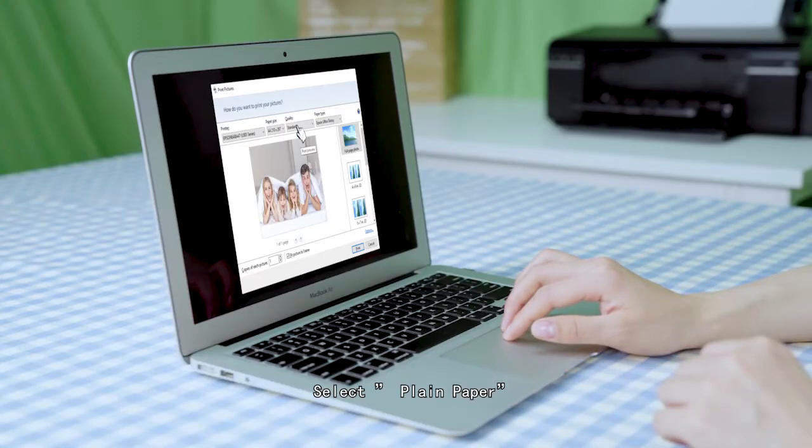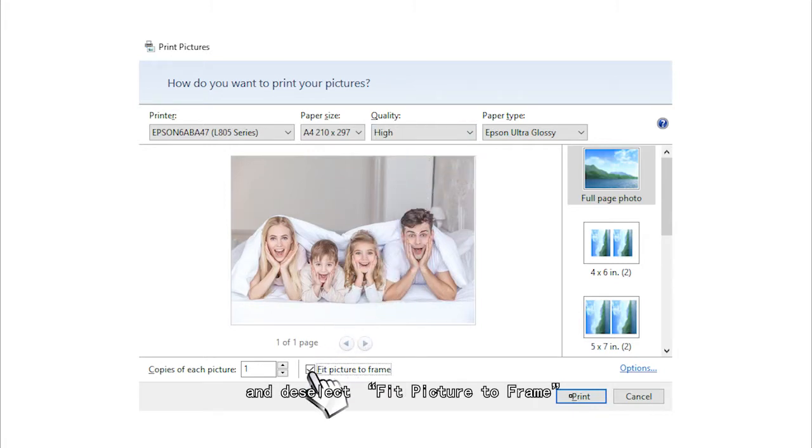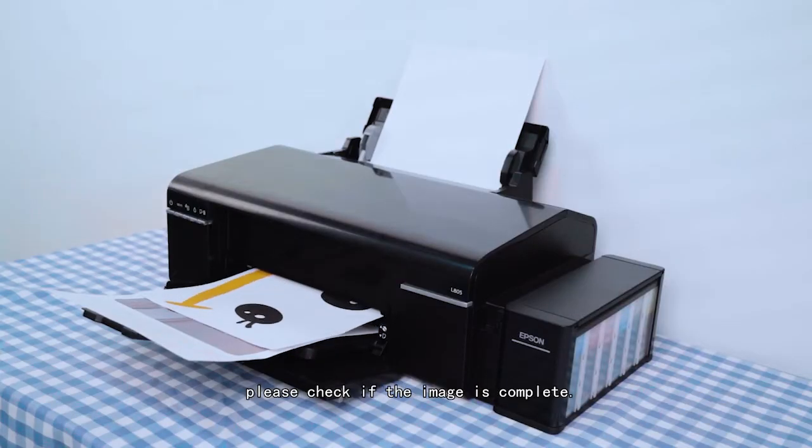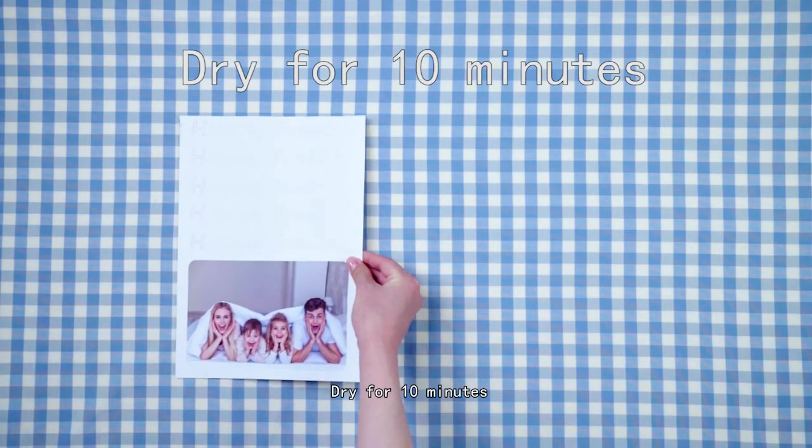Select plain paper. Set quality selection to high and deselect fit picture to frame. Click print. Once printing has finished, please check if the image is complete. Don't touch the image until it is dry. Dry for 10 minutes.